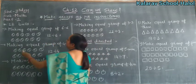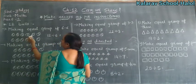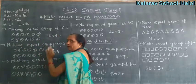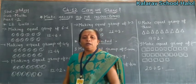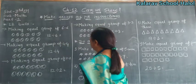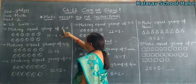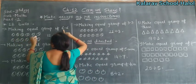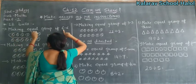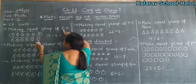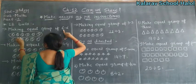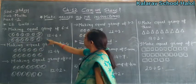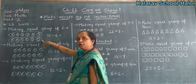So first of all: 1, 2, 3, 4, 5, 6, 7, 8, 9, 10, 11, 12. Total 12. I am making an equal group of 6-6. Then 1, 2, 3, 4, 5, 6. This is the second group. So total, how many? Total group: 2.